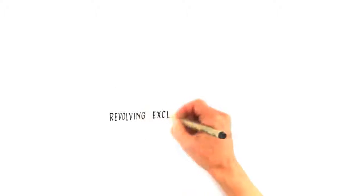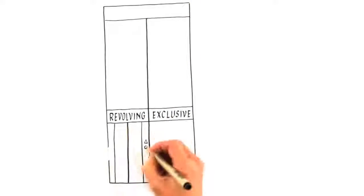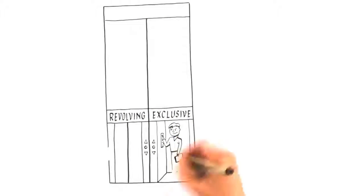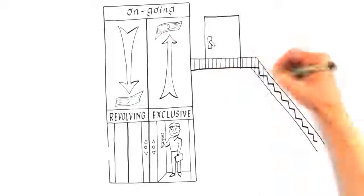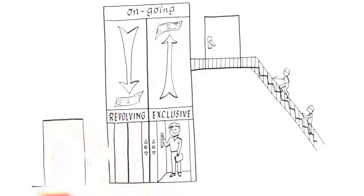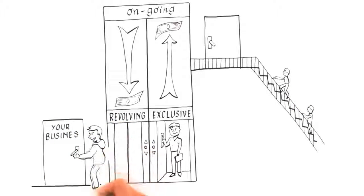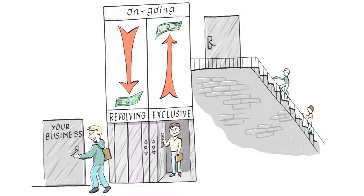Our Revolving Merchant Credit line is an exclusive product that provides you ongoing access to cash for your business. This was created to give our customers access to a high-limit credit line that they can use again and again for their business.